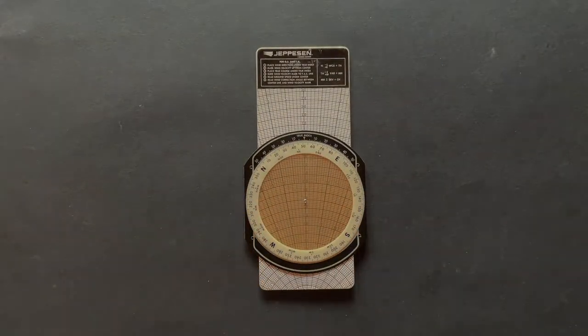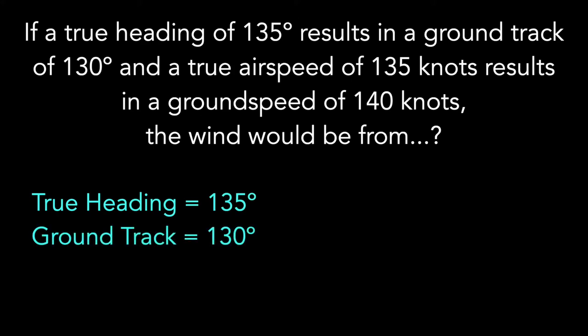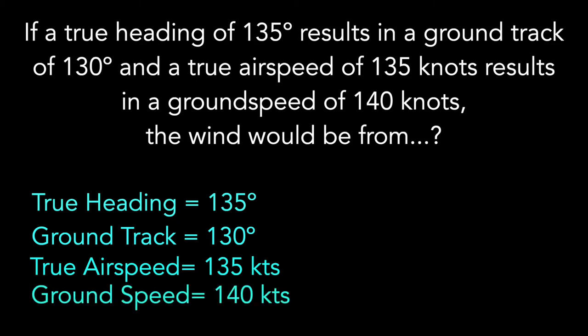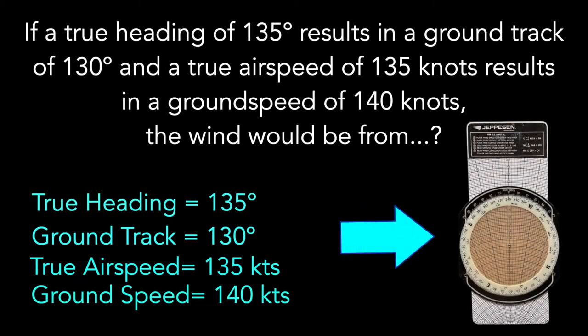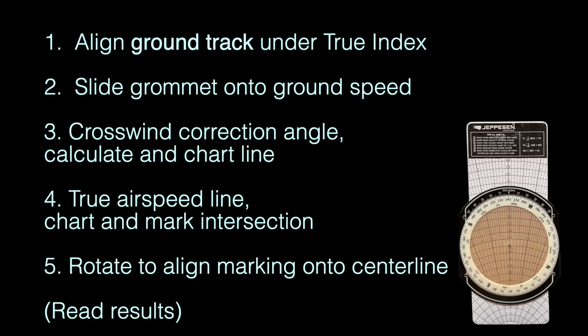Going back to this question now, we are given the following information: a true heading of 135 degrees, ground track of 130 degrees, true airspeed 135 knots, and lastly, ground speed is 140 knots. Basically, we'll be taking all this provided information and applying it to the calculator in the following order. This listed order is important, so feel free to screenshot this or write it down so you will remember it for later.